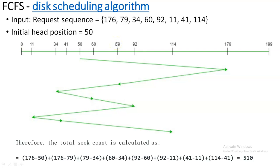Though it is a cylindrical format, we discard that and represent it in a straight line. You are going to start from 0, and here the highest number is 176, so you can end with 199. From 0 to 199 you are going to have a scale, and in that scale you are going to write all the request sequence numbers given in the question in increasing order.